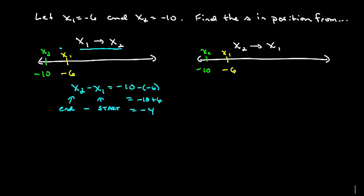So if we look up here at the number line and we go from x1 to x2, it says that that's negative 4. So we're moving left 4 units. That's what negative 4 means.